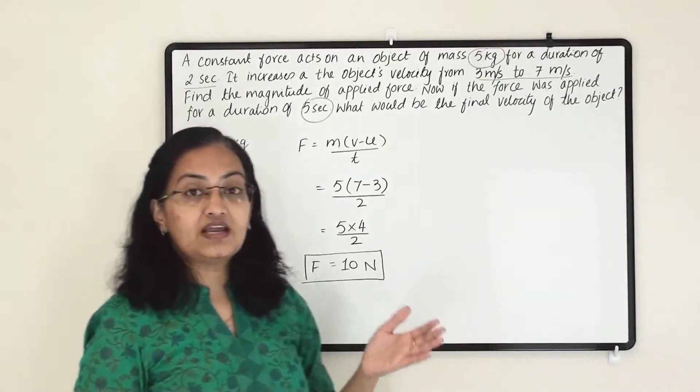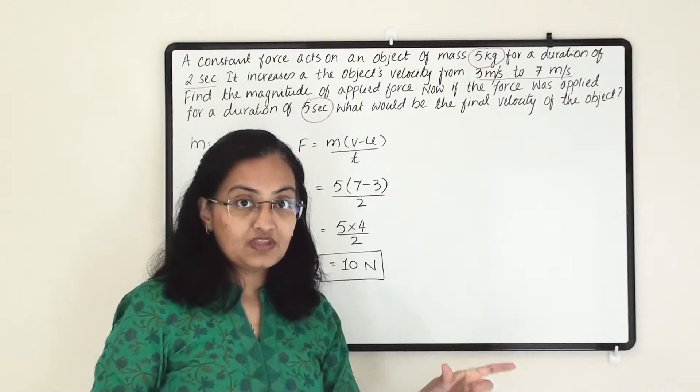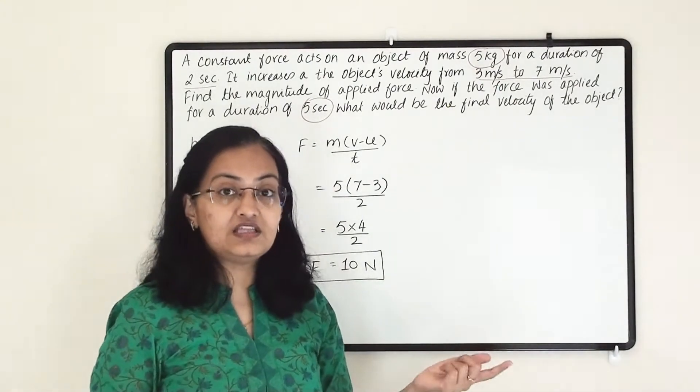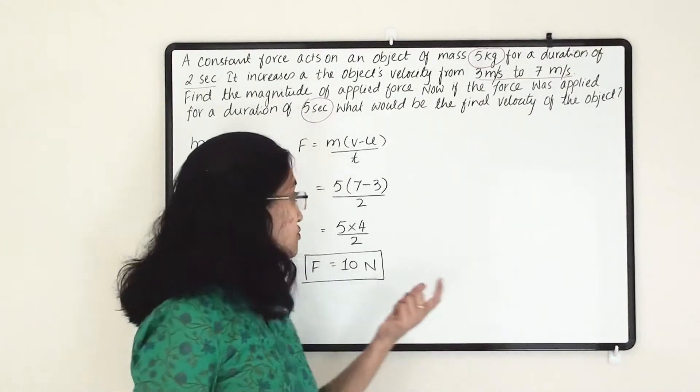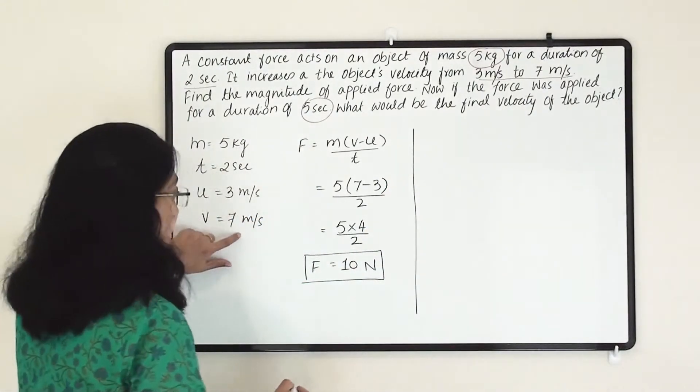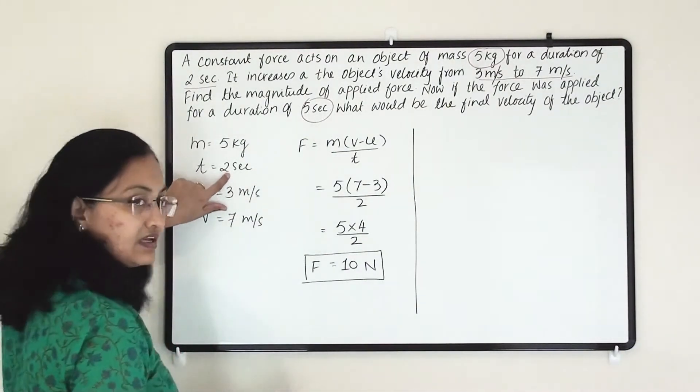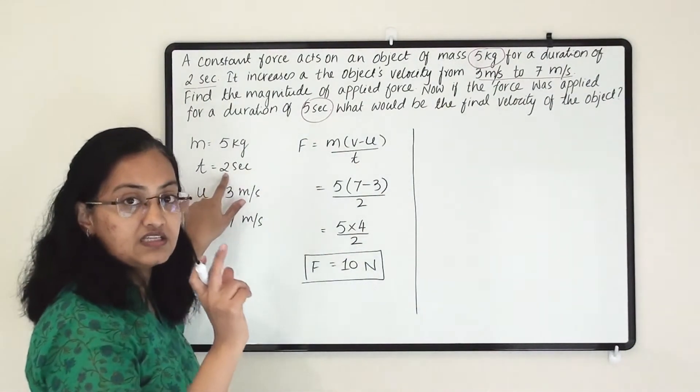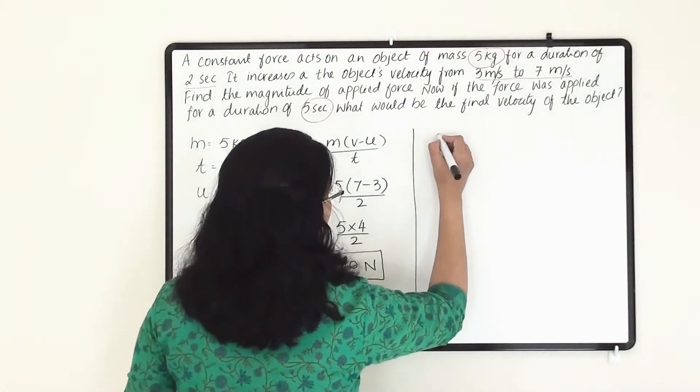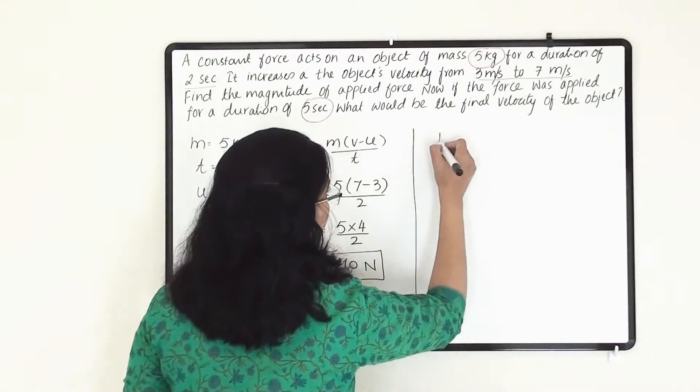We know that as per the second law of motion that when you increase time, then its effect will be increased and you can see that in final velocity. So here final velocity will be more than 7 because we are increasing the time.